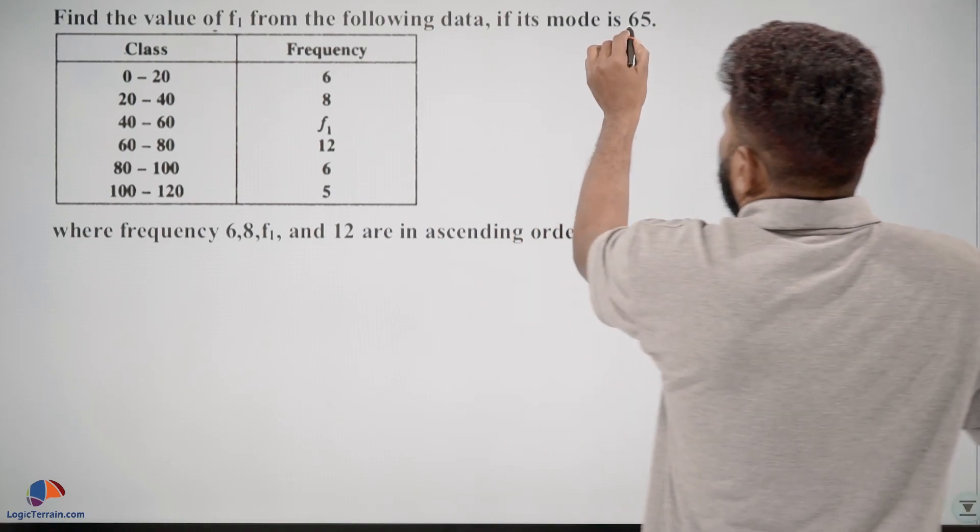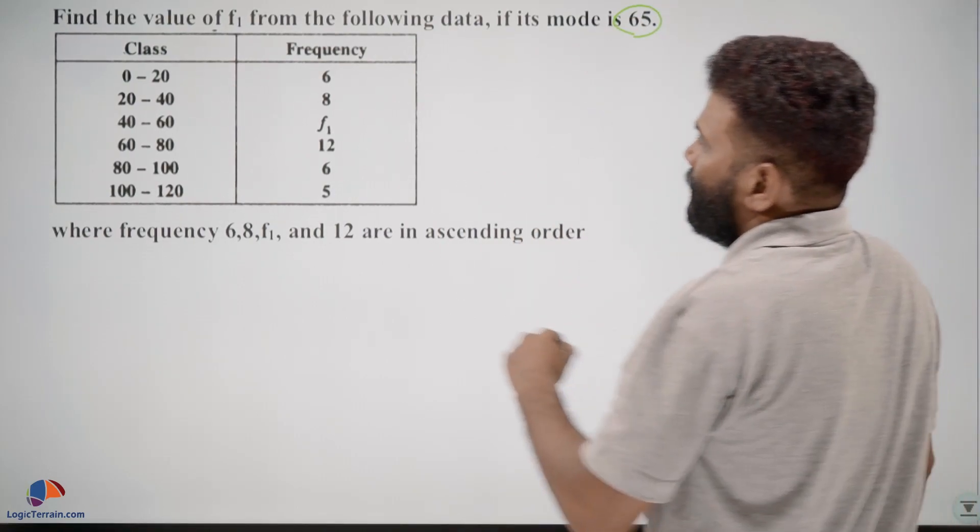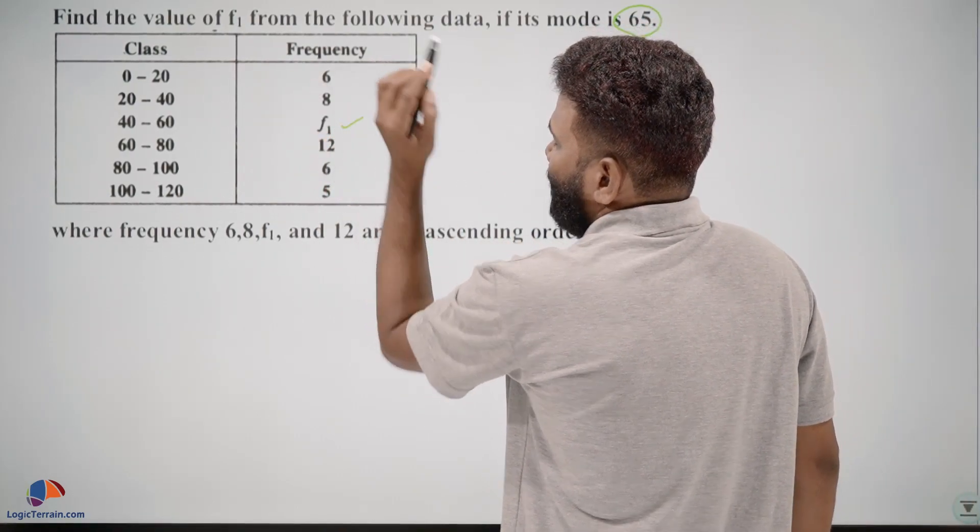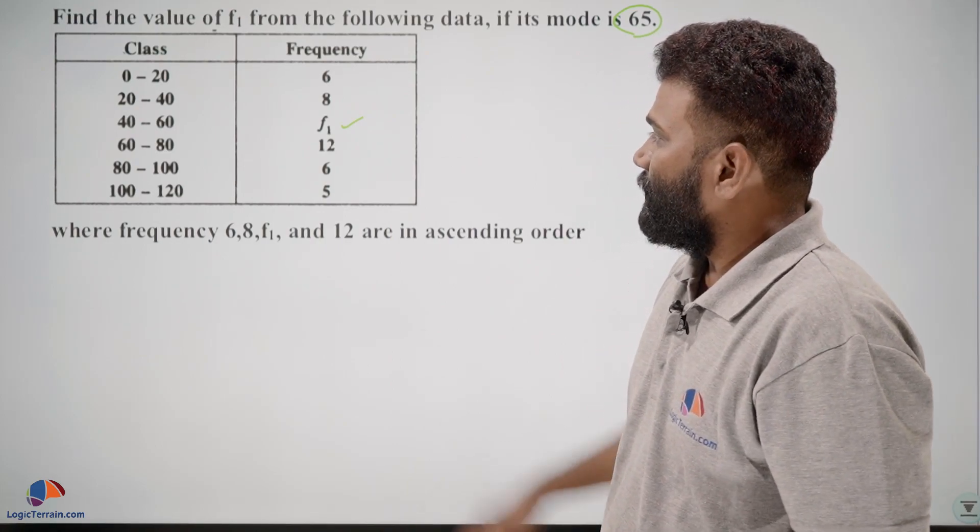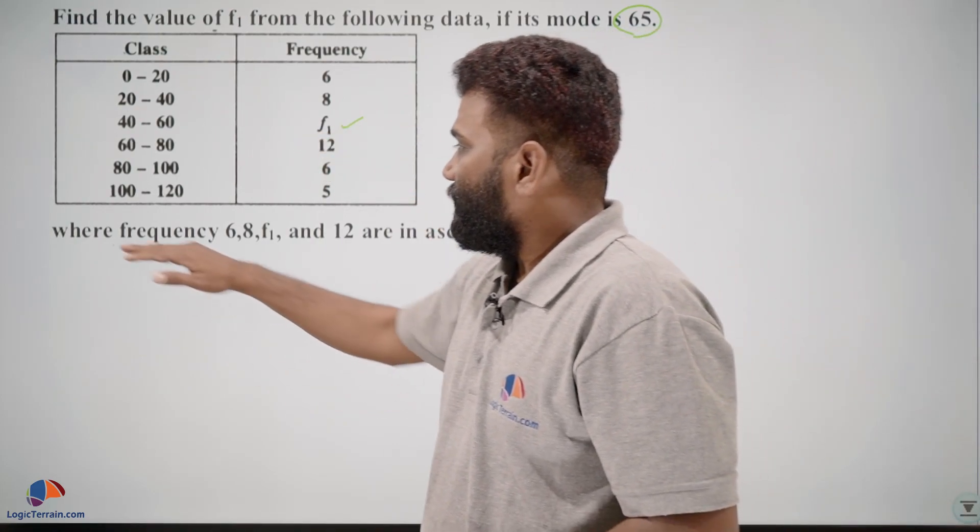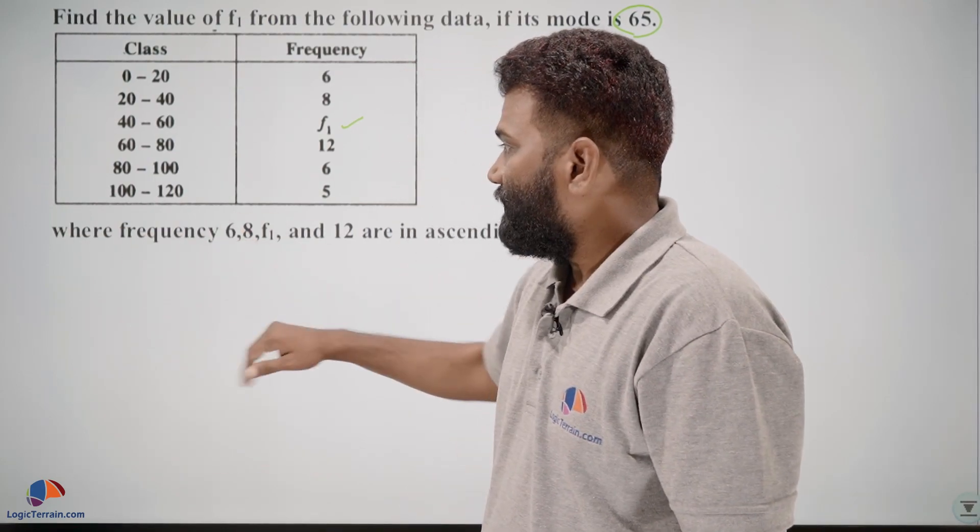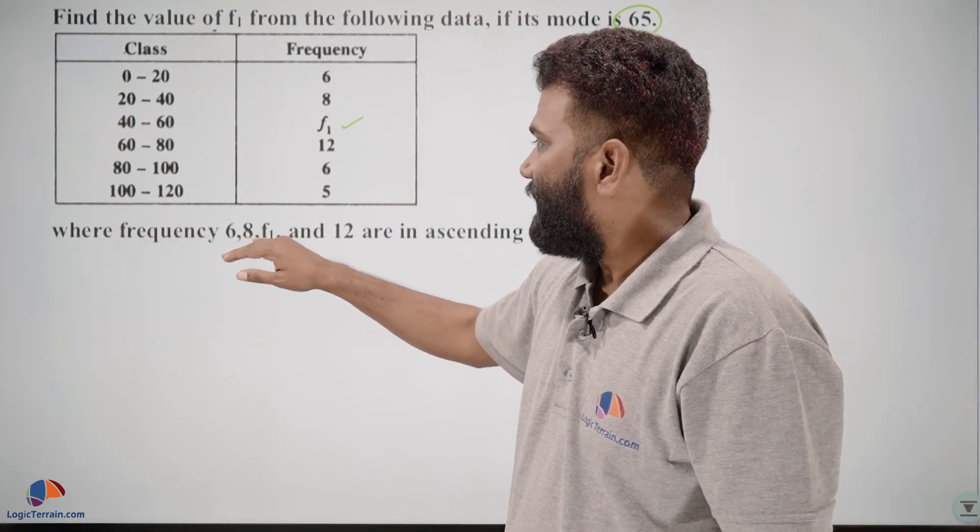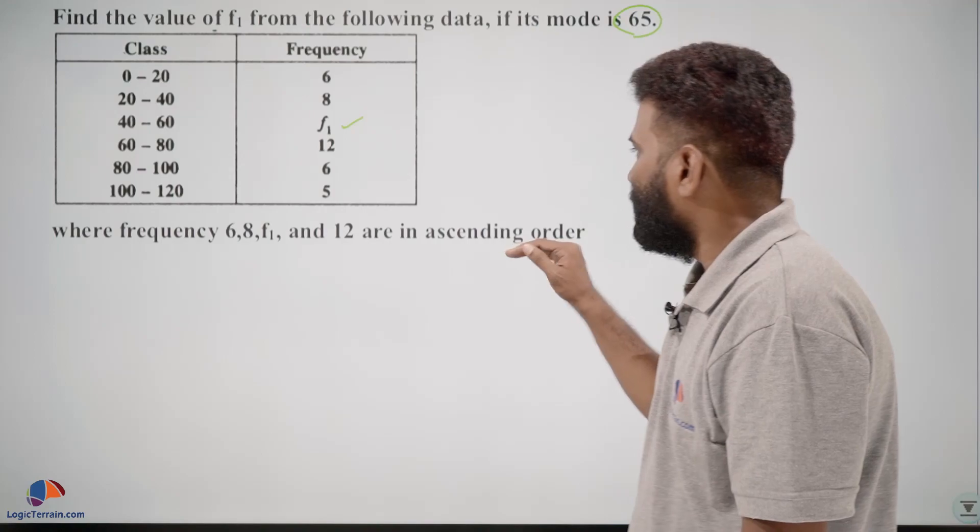So in this question it is given mode, and by using that we need to find the missing frequency f1. For further clarity, it is also given where frequency 6, 8, f1, and 12 are in ascending order.